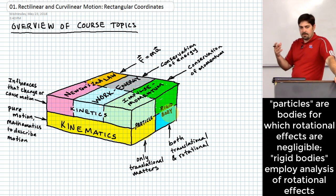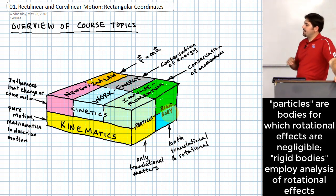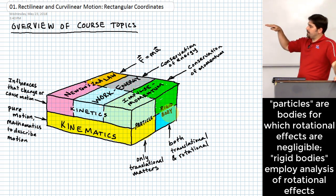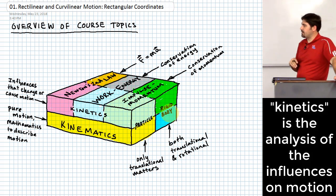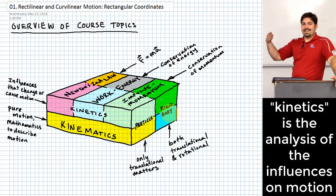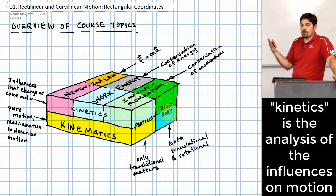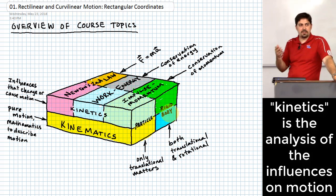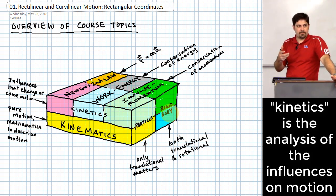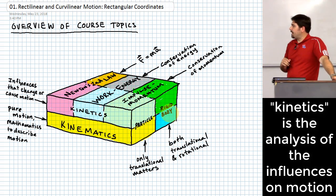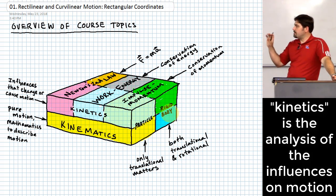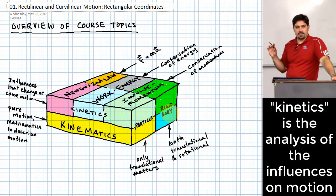Particles and rigid bodies have associated forces and moments, which are things that influence motion. That's where the upper layer of this figure comes in: the study of kinetics. Kinematics is describing how things move. Kinetics is basically approaching why do things move — what is causing the changes in the motion of particular objects. There are essentially three different methodologies to approach why things move.